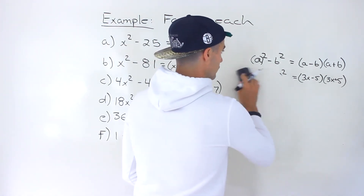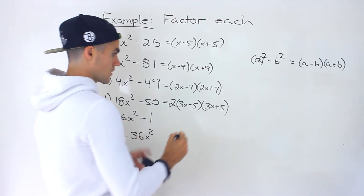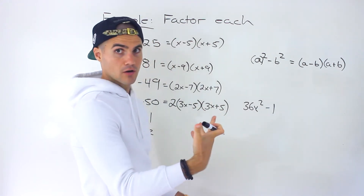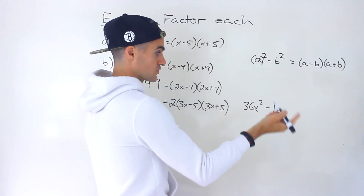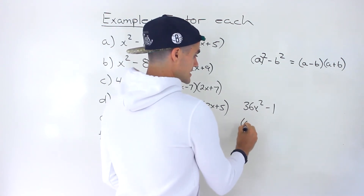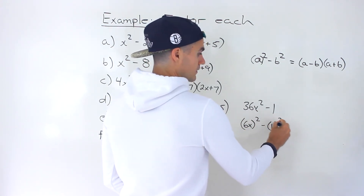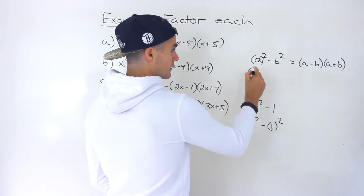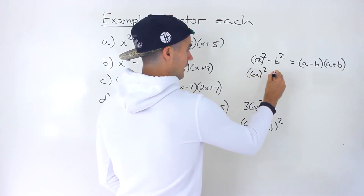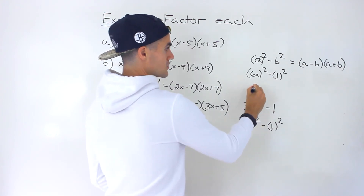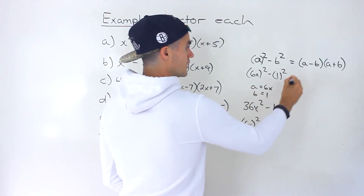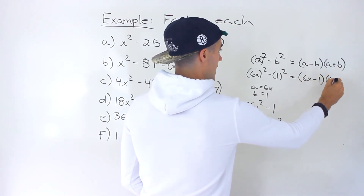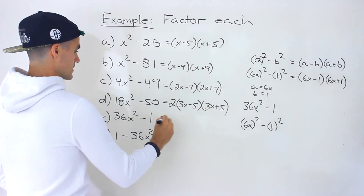For part e, we have 36x squared minus 1. The 1 can be rewritten as 1 squared, so this becomes (6x) squared minus 1 squared. The a value is 6x, the b value is 1. So that factors into (6x minus 1)(6x plus 1).